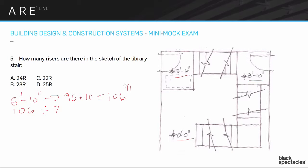Why 7? Because this is a library — a public building — and in a public stair, for accessibility reasons, the highest riser allowed is a 7-inch riser. In a single-family house or a mechanical space, you can have a higher riser — up to 8 inches depending on the municipality — but in any public stair, 7 inches is the maximum. Our first hope is that 106 divided by 7 gives us a nice even number.